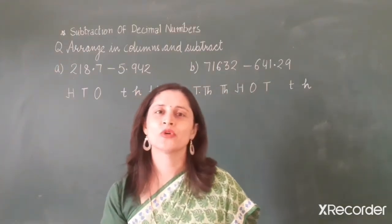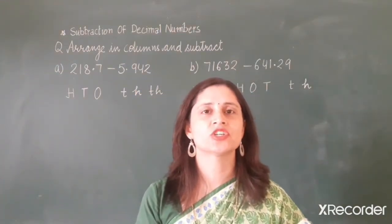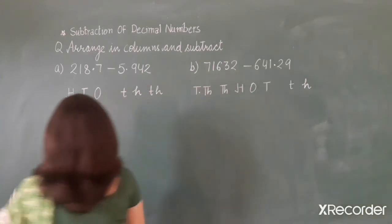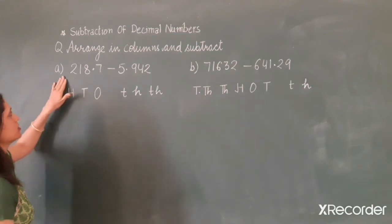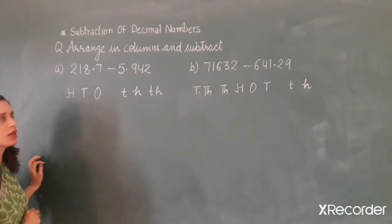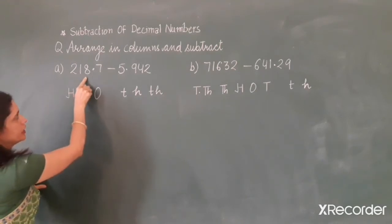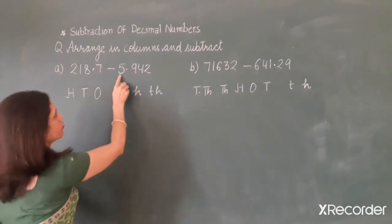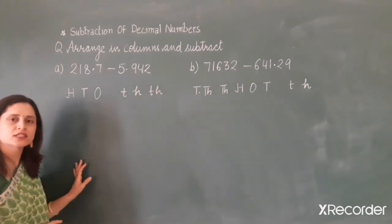Hello friends, welcome to Maths class. Today we will learn subtraction of decimal numbers. Here, the first example is: we have to subtract two decimal numbers. The first decimal number is 218.7 and the second is 5.942.